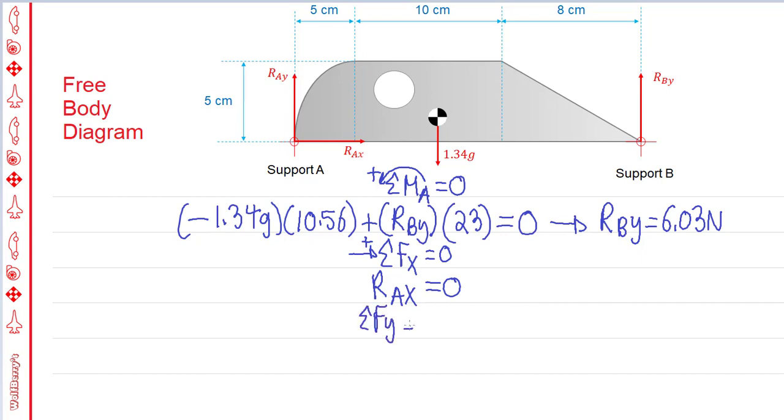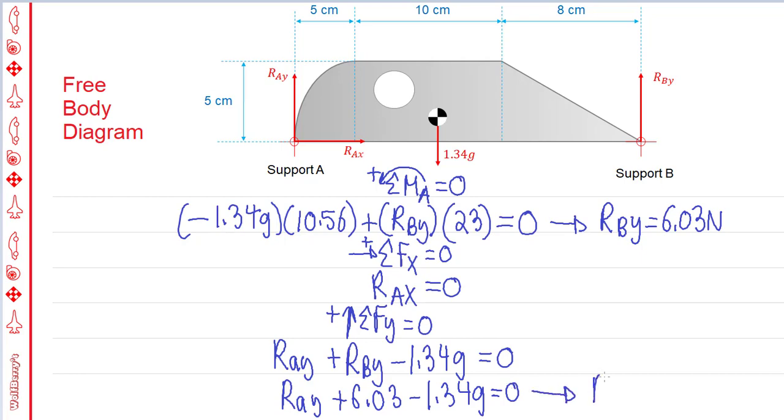Final equation, sum of force in y is equal to 0. I'm going to pick up as positive. For this equation, we have R_AY going up, plus R_BY also going up, minus 1.34g which is going down, equals 0. We're looking for R_AY, plus R_BY which we have as 6.03, minus 1.34g, is equal to 0. From this, we can deduce that R_AY is equal to 7.11 newtons.